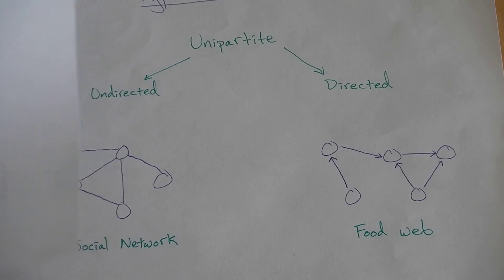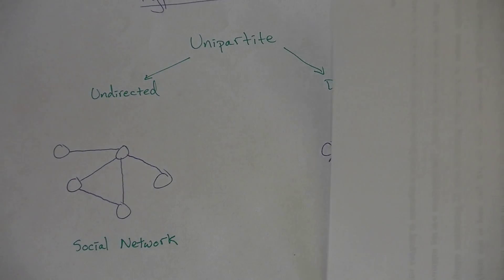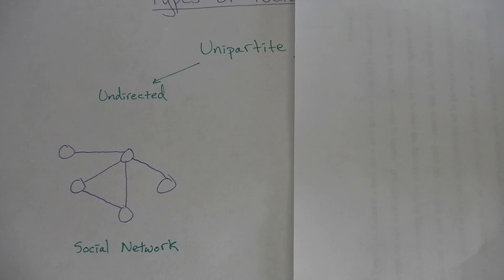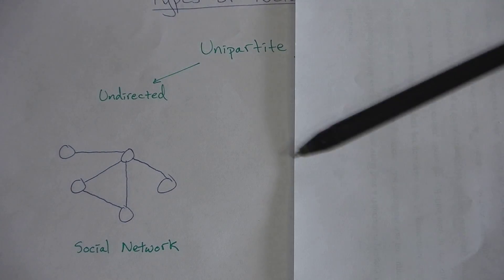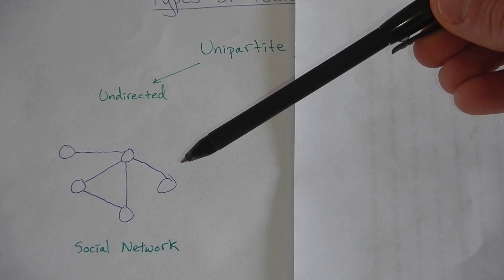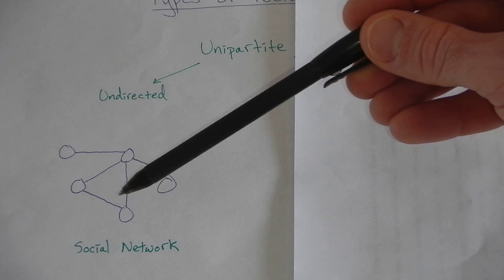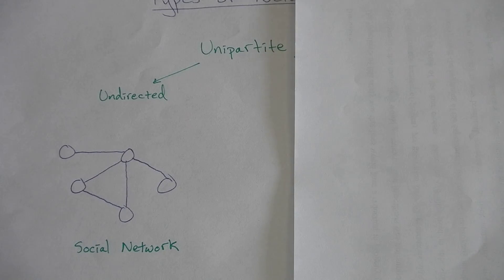Remember, the direction of the links is important. Whereas in an undirected unipartite network, there's no direction between the links. Typically, these undirected networks are characteristic of social networks.